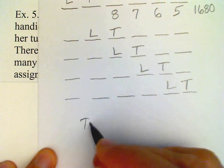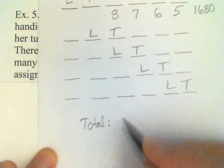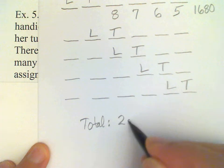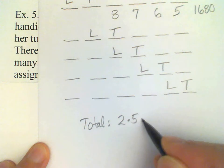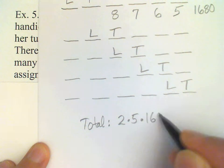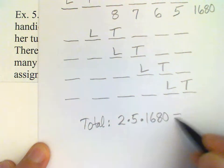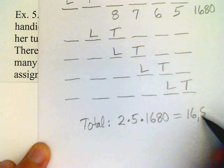So the total, then, is 2 times 5 times 1680. The answer is 16,800 possibilities.